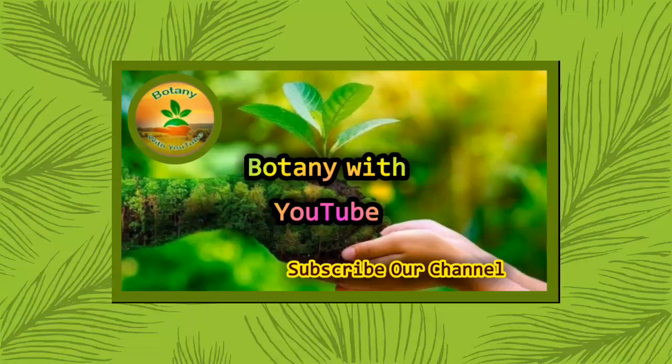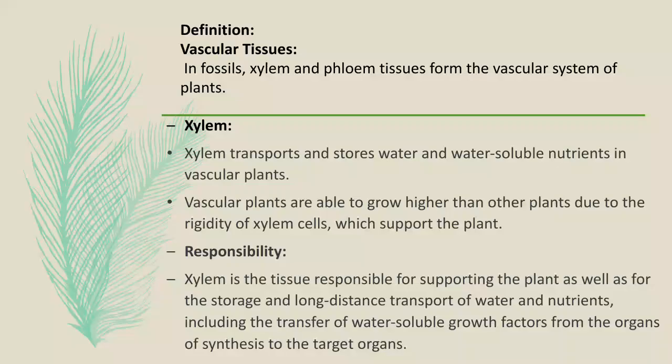Vascular tissues in plants: xylem and phloem tissues form the vascular system of plants. Xylem transports and stores water and water-soluble nutrients in vascular plants. Vascular plants are able to grow higher than other plants due to the rigidity of xylem cells, which support the plant.